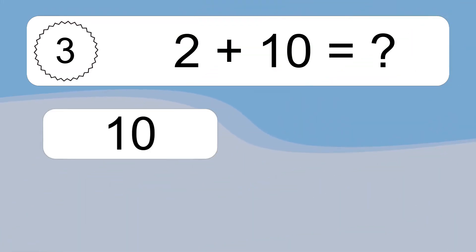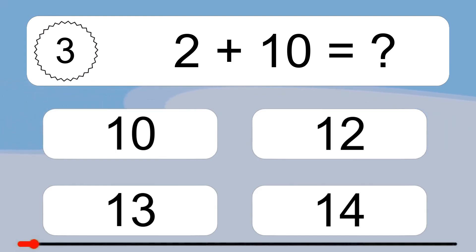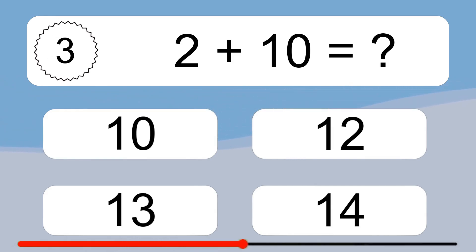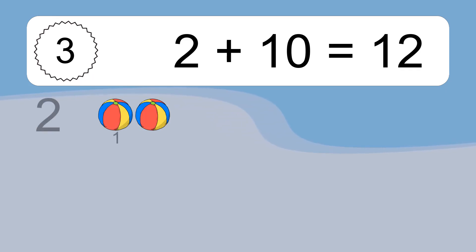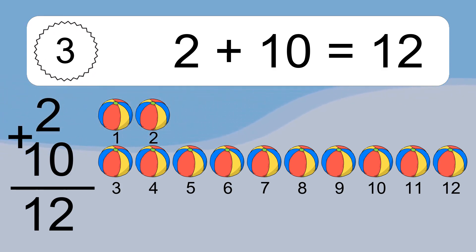2 plus 10 equals what? 2 plus 10 equals 12. Let's count it: 1, 2, 3, 4, 5, 6, 7, 8, 9, 10, 11, 12.